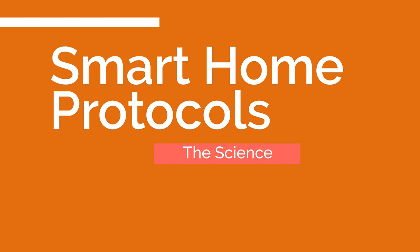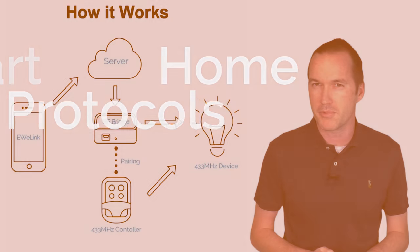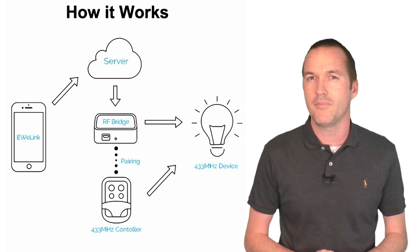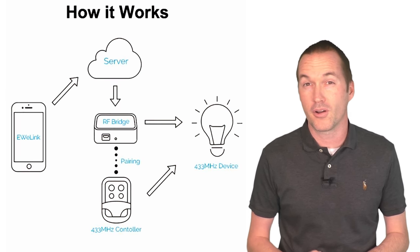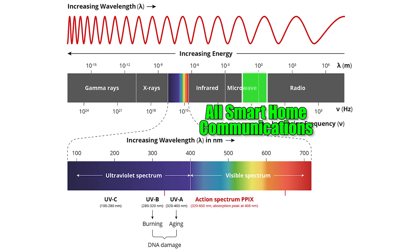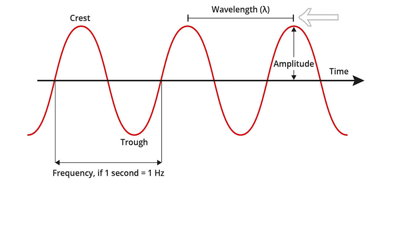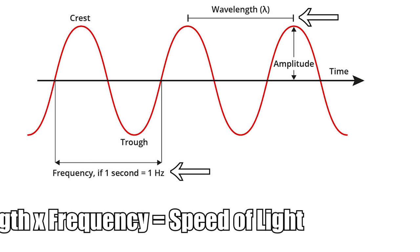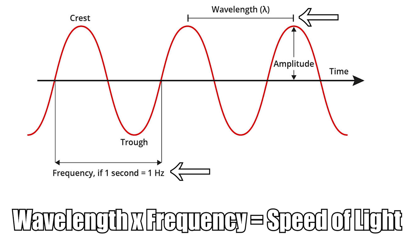Even though there's a protocol that we specifically call radio frequency or RF433, all smart home communication protocols actually use radio frequencies. Radio frequencies are a type of electromagnetic radiation that sits on the lowest energy side of the electromagnetic spectrum. Everything on this spectrum has two important attributes — wavelength and frequency — and multiplying the wavelength times the frequency gives you the speed at which the waves travel.